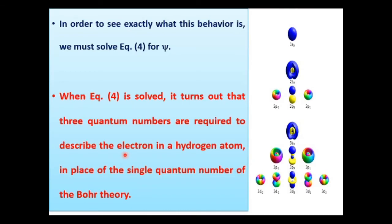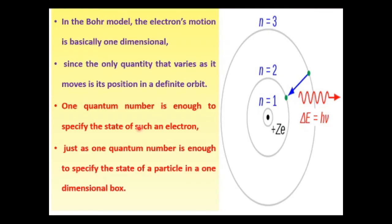Solving this equation, it turns out that three quantum numbers are required to describe the electron in a hydrogen atom, in place of the single quantum number of Bohr's theory. Since there are three independent coordinates, there will be three quantum numbers instead of one. In the Bohr model, the electron's motion is essentially one-dimensional — the only quantity that varies is its position in a definite orbit — so one quantum number is sufficient to specify the state of the electron.